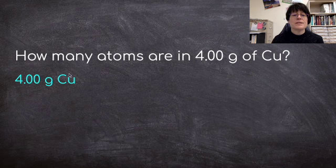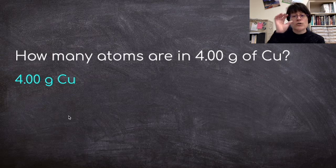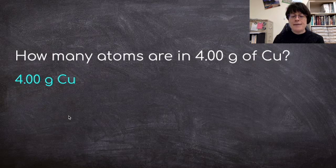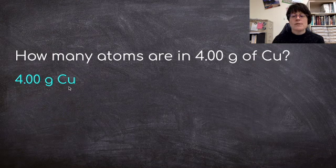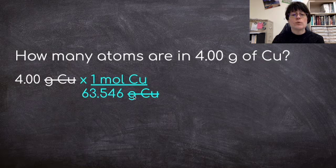Another problem we can do is how many atoms are in 4 grams of copper. So this will be a two-step problem. You cannot go directly from grams to atoms. You have to go through the molar mass. We have to figure out first the number of moles. So I have 4 grams of copper. And if I go to my periodic table, I find copper right here. I see that 1 mole of copper is 63.546 grams. So I will write that down.